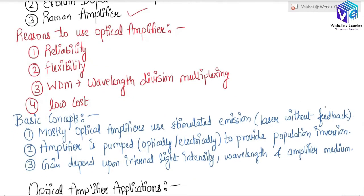We have four reasons why we use optical amplifiers. First is reliability — they are not going to degrade with environmental factors very easily. Second, they are flexible to use and can be used in Wavelength Division Multiplexing (WDM) as well. Because of the popularity of WDM, optical amplifiers have become really popular. Third, these are low cost, so if cost is a factor in your communication system, you can easily use optical amplifiers instead of repeaters.